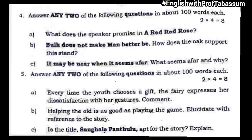Bit number five: answer any two of the following questions in about 100 words each. 'Every time the youth chooses a gift, the fairy expresses her dissatisfaction with her gestures — comment.' This is from 'The Five Boons of Life.' 'Helping the old is as good as playing the game — elucidate with reference to the story' is from 'Playing the Game.' 'Is the title Sanghala Pantulu apt for the story? Explain.' — this is from the short story 'Sanghala Pantulu.' So Section A is done.